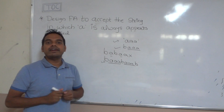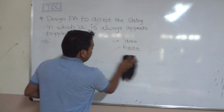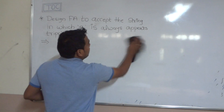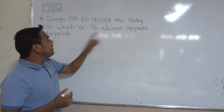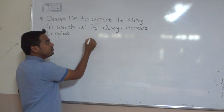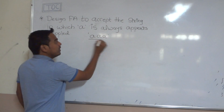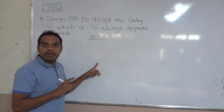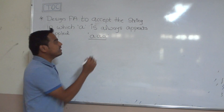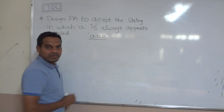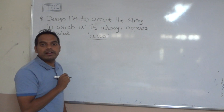We have to design such a finite automata. First, we need to find the minimum string. Since A always appears tripled, the minimum string is A-A-A — three consecutive A's. If we provide this string to the finite automata, it is accepted because it consists of three consecutive A's.